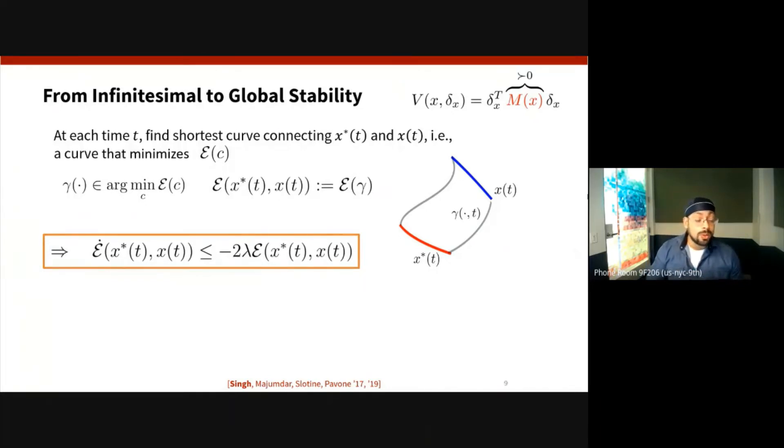Now in the actual proof we prove something a little bit more general which uses upper Dini derivatives, but the intuition is exactly the same. So what are the benefits here?